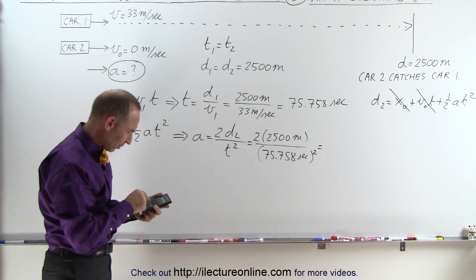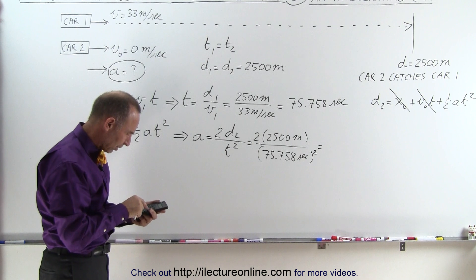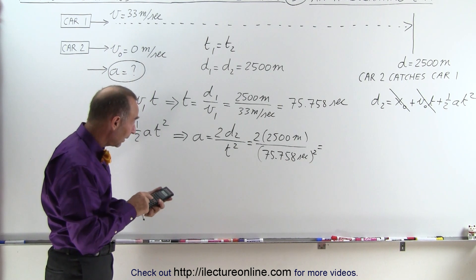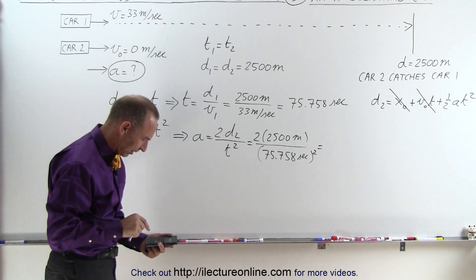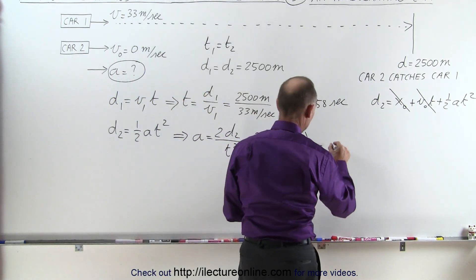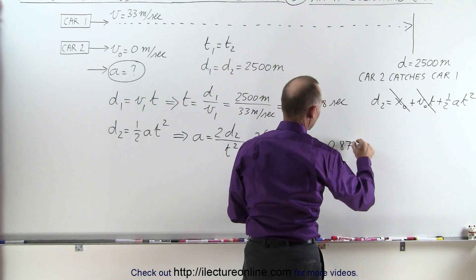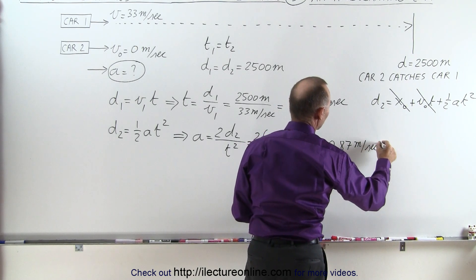And let's see here, so square that number, put in the denominator, times 5000 equals, and we have an acceleration of 0.87 meters per second squared.